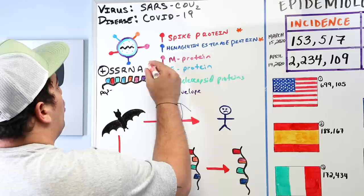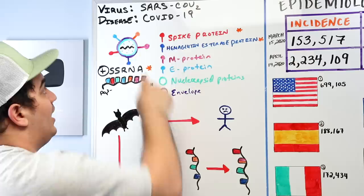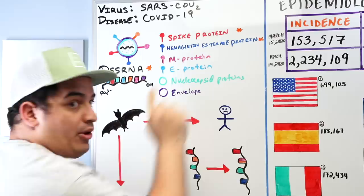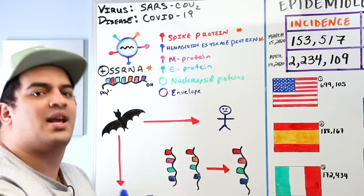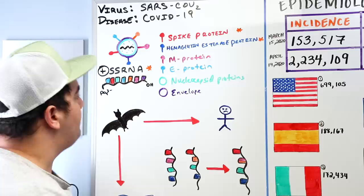Three key takeaways: SARS-CoV-2 causes COVID-19; its surface proteins — spike protein and hemagglutinin esterase — enable attachment and fusion to host cells; and its single-stranded RNA injected into host cells leads to protein synthesis, enzyme production, new virus assembly, cell destruction, and a massive cytokine storm.